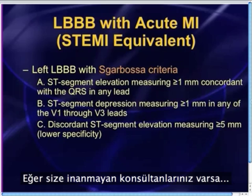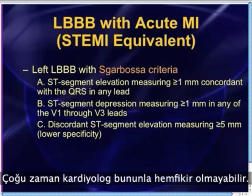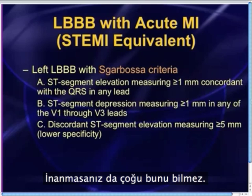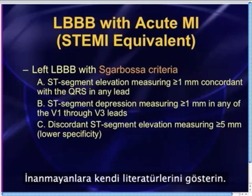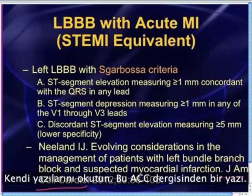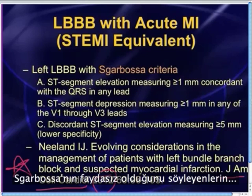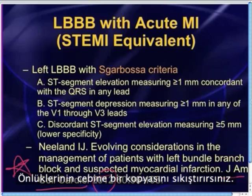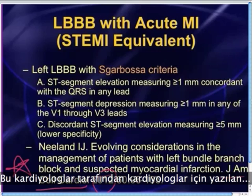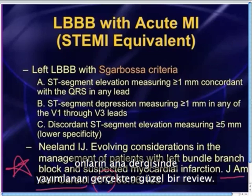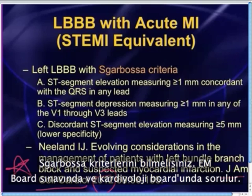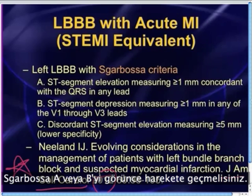If you have consultants who don't believe you, just show them this article. Cardiologists may not be up on this even though you'd think so — a lot of them don't know about it or don't believe in it. Show them their own literature. This is from the Journal of the American College of Cardiology — a really great review article by cardiologists for cardiologists in their main journal. You've got to know Sgarbossa criteria. It's on the EM boards, it's on the cardiology boards. And when you see Sgarbossa A or B, you've got to act on it.